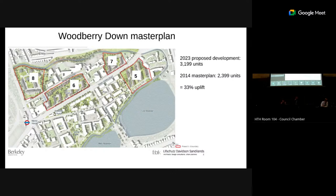This is the pre-application for the Woodbury Down masterplan, which covers phases five to eight of the development. Phases one to four have either been built, are under construction, or have been submitted for planning permission. This development only relates to phases five to eight, proposing a residential-led development of just over three thousand units. There was a previous masterplan in 2014 which proposed two thousand four hundred units for these four phases.